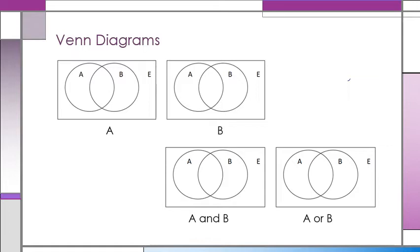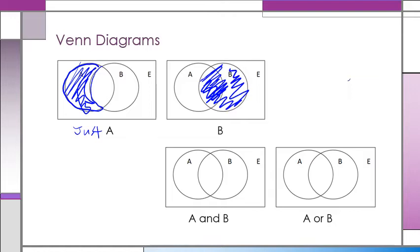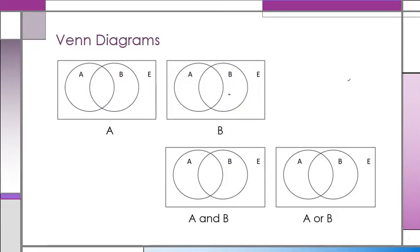If it was going to be just A, it would only be this part right here. B would be this circle here. Just B would be just this part here.